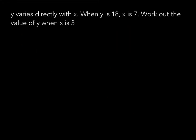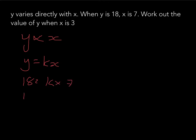Here's another question to practise. Y varies directly with x. We're told y is 18 when x is 7, and we need to find the value of y when x is 3. So y equals kx. Substituting: 18 equals k times 7, so 18 over 7 equals k. That doesn't simplify, so the equation is y equals 18 over 7 times x.